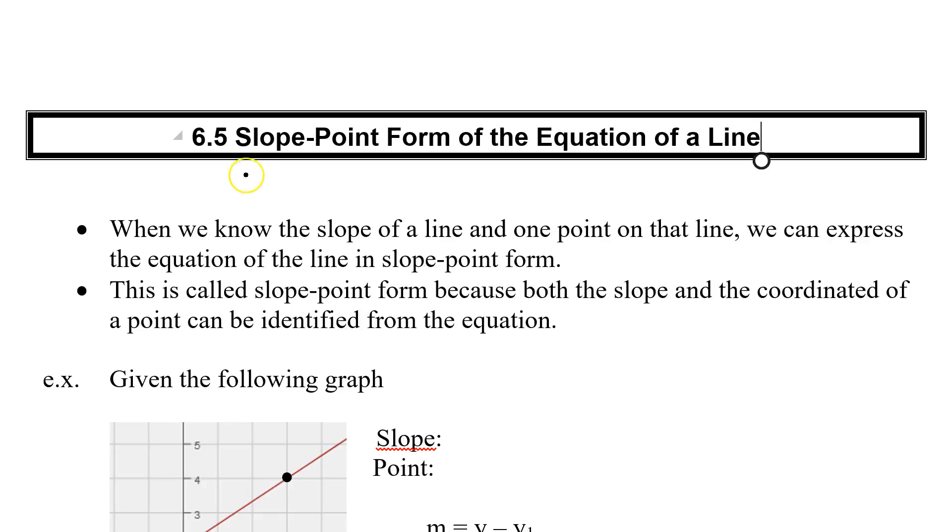In this one, we're going to have to get our slope, and we're going to have to know one point that falls on our line. If we know these two things, we can now use our equation. When we know the slope of a line and one point of the line, we can express the equation of the line in slope-point form. It's called slope-point form because the slope and the coordinates of one point can be identified from the equation and from the graph.